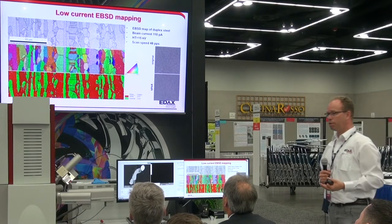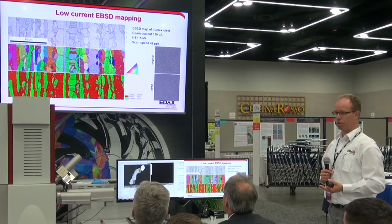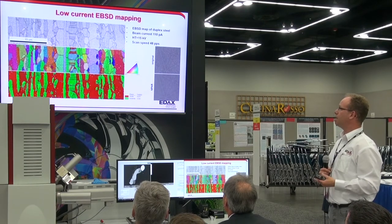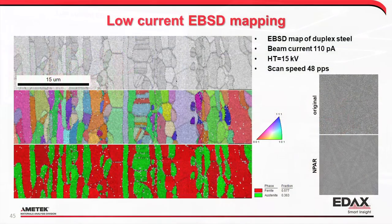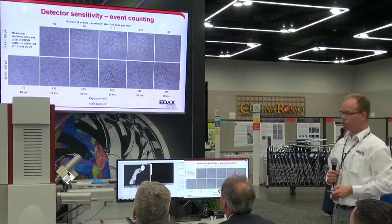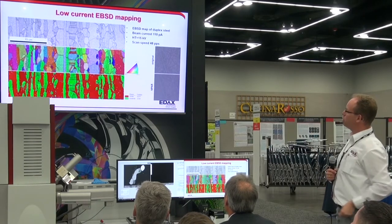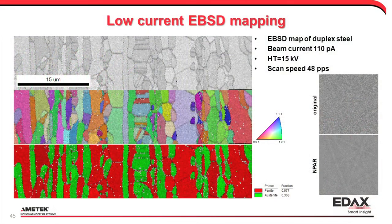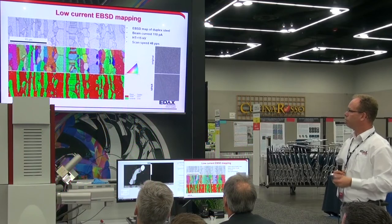This shows mapping at just 110 picoamps of beam current — one-third of the already low 380 picoamps. You can just make out the bands in the original pattern, but for the band detection algorithms and the Hough Transform, that is enough to identify where the bands are. We can actually get a pretty good map and phase separation based on these conditions.